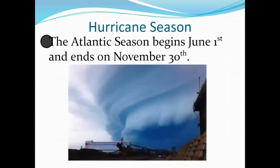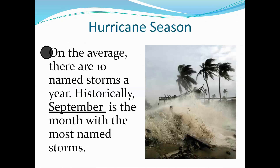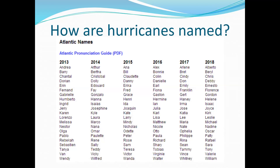The Atlantic hurricane season begins June 1st and ends on November 30th. On average, there are about 10 named storms a year, and historically September is the month with the most named storms. Hurricanes are named based on the places where they originated — you'll see Central and South American, and North American names. Once a hurricane has been considered bad enough, that name is retired. There will never be another Hurricane Katrina or Hurricane Hugo — those names are retired.